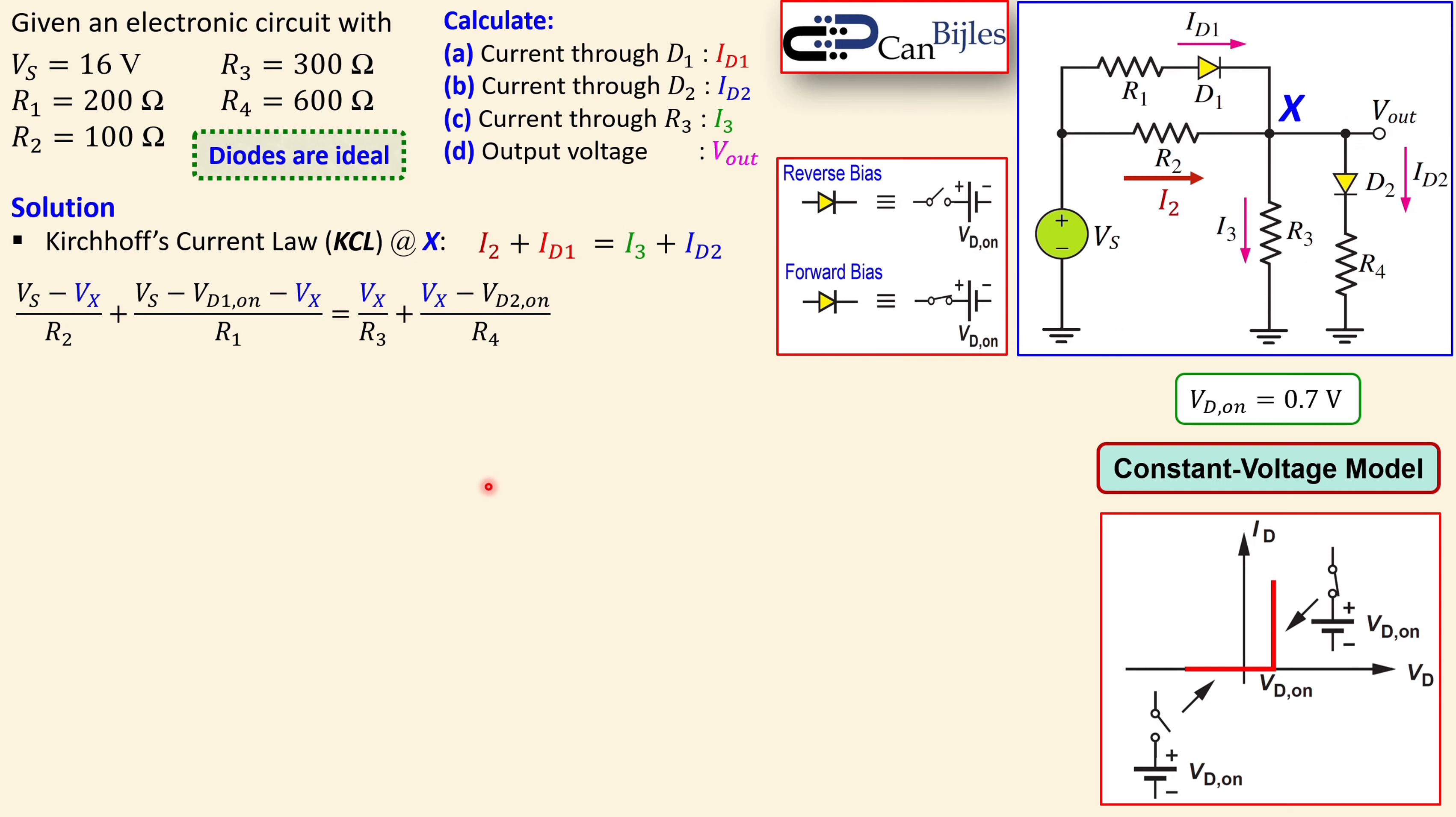Now we have an expression where we see the VD1s, the Vx, the resistors, and also the Vs. So we can now substitute the values that are given. VD1 was 0.7, 16 volts for our Vs, and also the resistor values. We have 100 for R2, 200 for R1, etc. So let's just write it down.